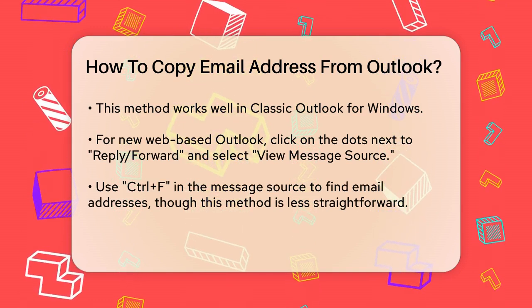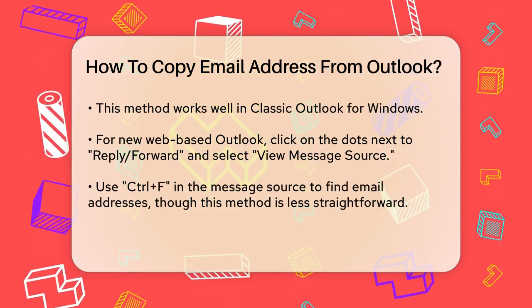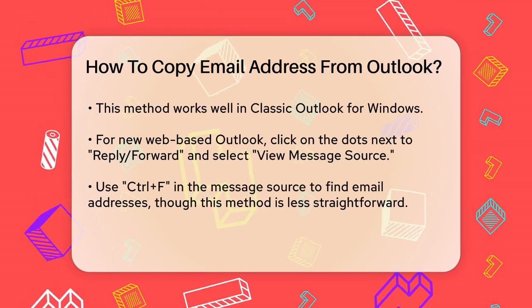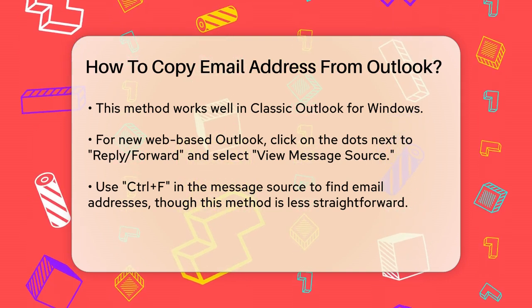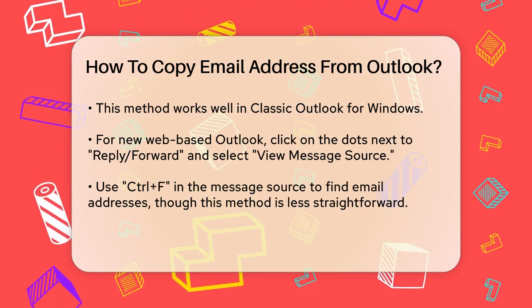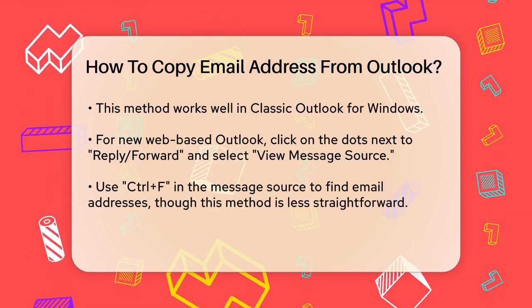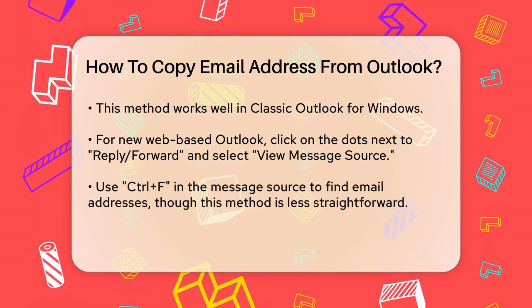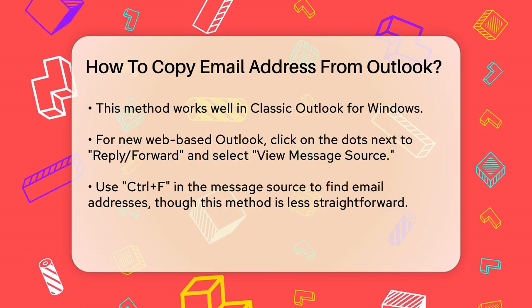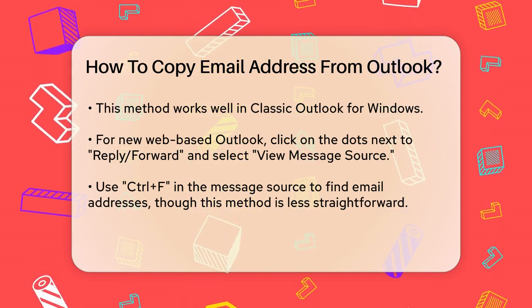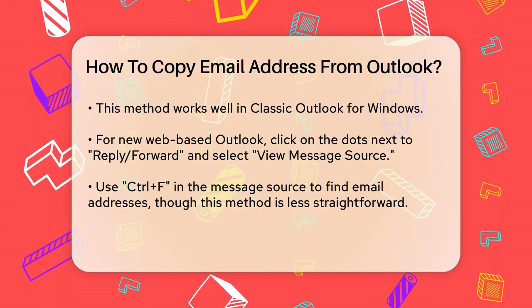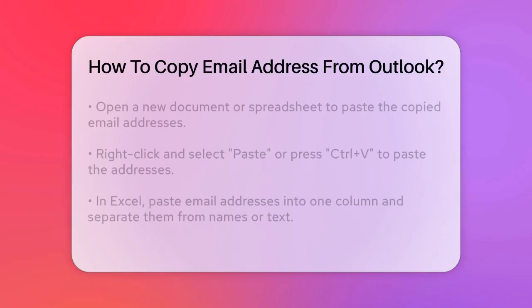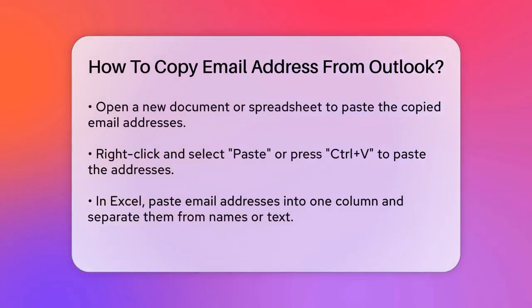However, if you're using the new web-based Outlook, things can get a bit trickier. In the new Outlook, you might need to view the message source to copy multiple email addresses at once. Click on the dots to the right of the Reply and Forward buttons and select View Message Source. Here, you can use Ctrl-F to find the email addresses, but this method is more cumbersome and not as straightforward.